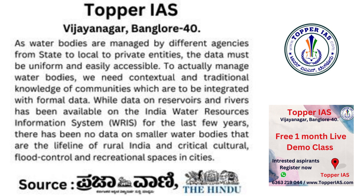As water bodies are managed by different agencies — from state to local to private entities — the data must be uniform and easily accessible. To actually manage water bodies, we need contextual and traditional knowledge of communities integrated with formal data. While data on reservoirs and rivers has been available on the India Water Resources Information System (WRIS) for the last few years, there has been no data on smaller water bodies that are the lifeline of rural India and critical cultural, flood control, and recreational spaces in cities.